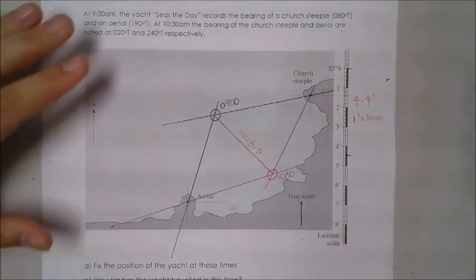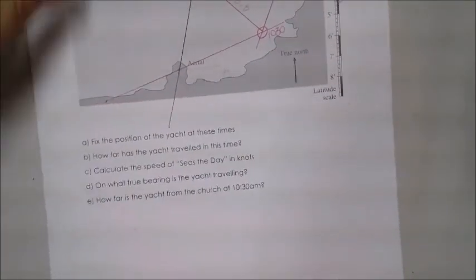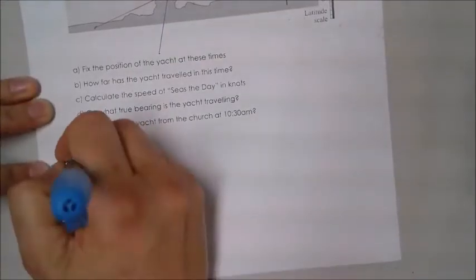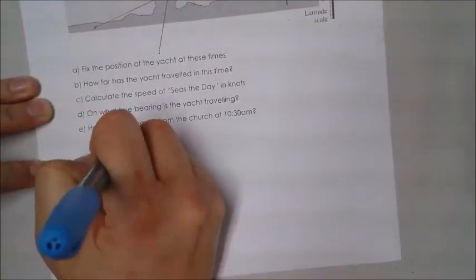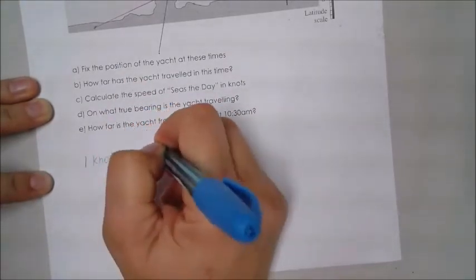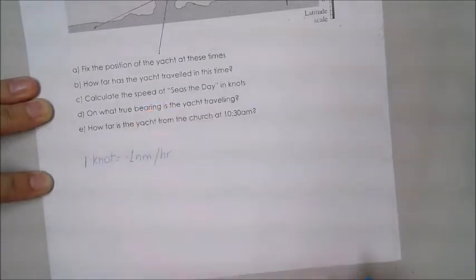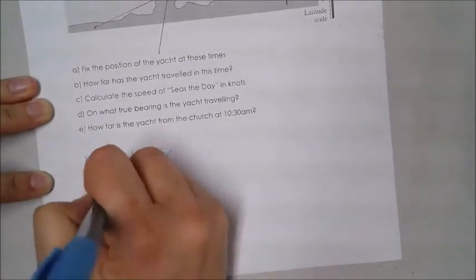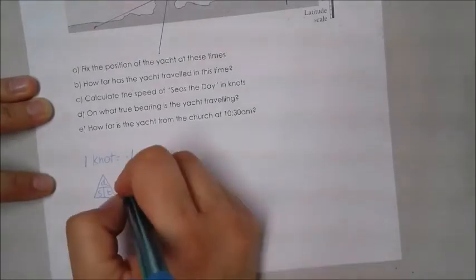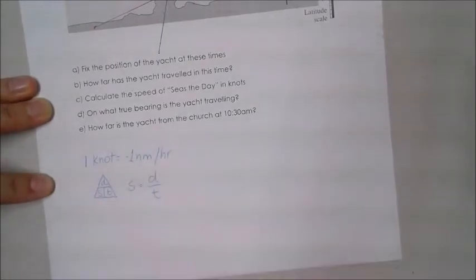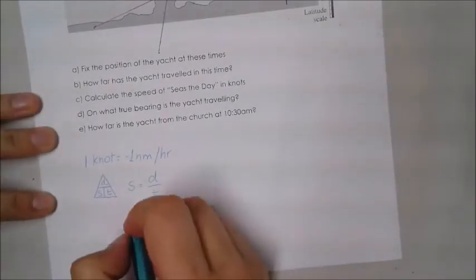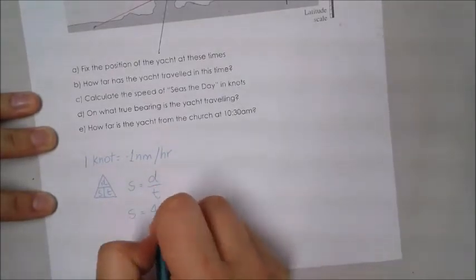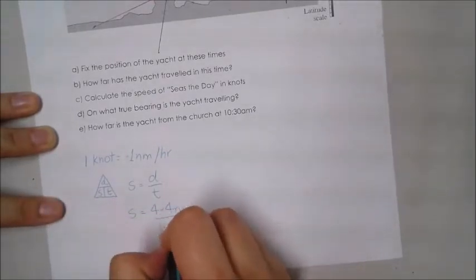Part C asks us to calculate the speed of Seize the Day in knots. So a few things that we need to remember first. One knot equals one nautical mile per hour. And we should also recall our speed distance time triangle. Therefore, speed equals distance over time.